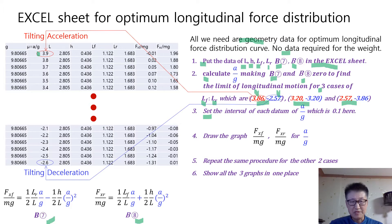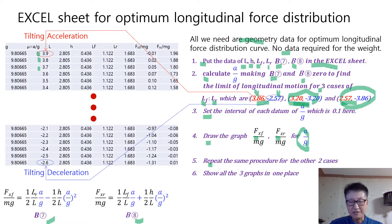The first data set is for the ratio of 4:6. The second data set is for the ratio of 5:5. The third data set is for the ratio of 6:4. The first element of each set represents tilting acceleration, and the second element represents tilting deceleration. Set the interval of G unit data at 0.1 — so 3.9, 3.8, 3.7, and so on, decrementing by 0.1. Then draw the graph for the longitudinal front-wheel force and rear-wheel force versus G unit. Repeat the same procedure for the other two cases, and finally show all three graphs in one place.